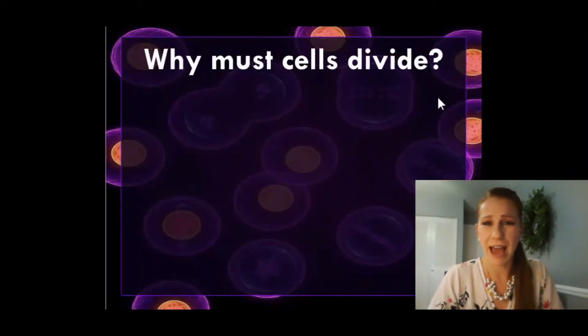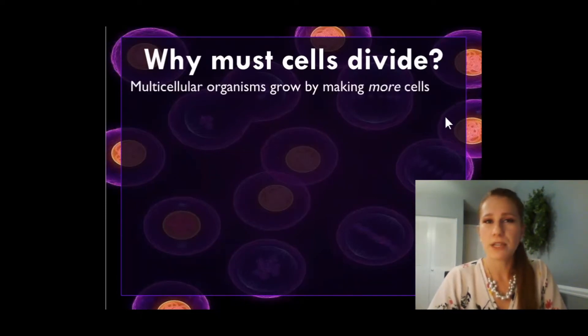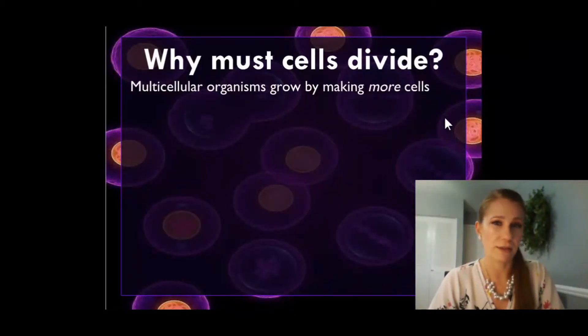First off, why do cells have to divide? Why can't we just start off as a single-celled zygote and stay that way forever? One, it'd be a little weird having one cell try to do everything that our body can do. It would be a blob. It wouldn't work very well. But beyond that, multicellular organisms like ourselves have to grow by making more cells, not bigger cells.